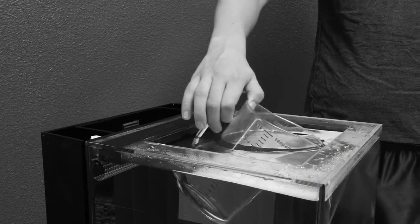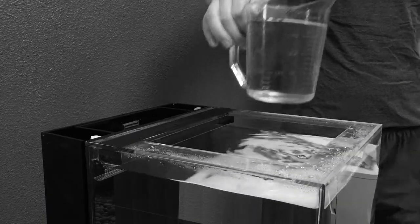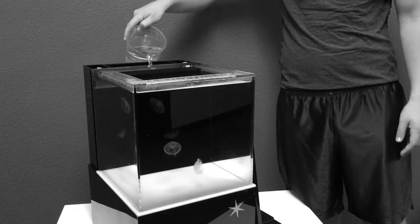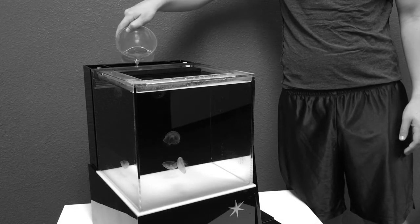Slowly remove about a gallon of water from the top of your tank without catching any of your little friends while slowly adding a gallon of new salt water into the filter box.